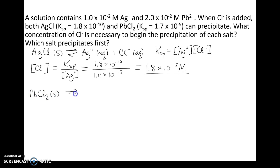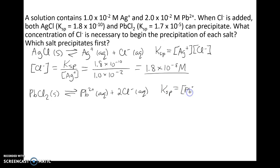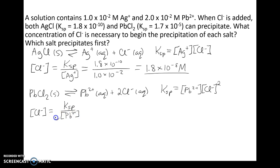Now let's do the same thing for lead chloride. PbCl₂ solid will react in water to make Pb²⁺ plus 2Cl⁻. The expression for the solubility product constant is the concentration of Pb²⁺ times the concentration of chloride ions squared. We can isolate chloride on the left-hand side, giving us the concentration of chloride equals the square root of Ksp over [Pb²⁺], because we had chloride squared.